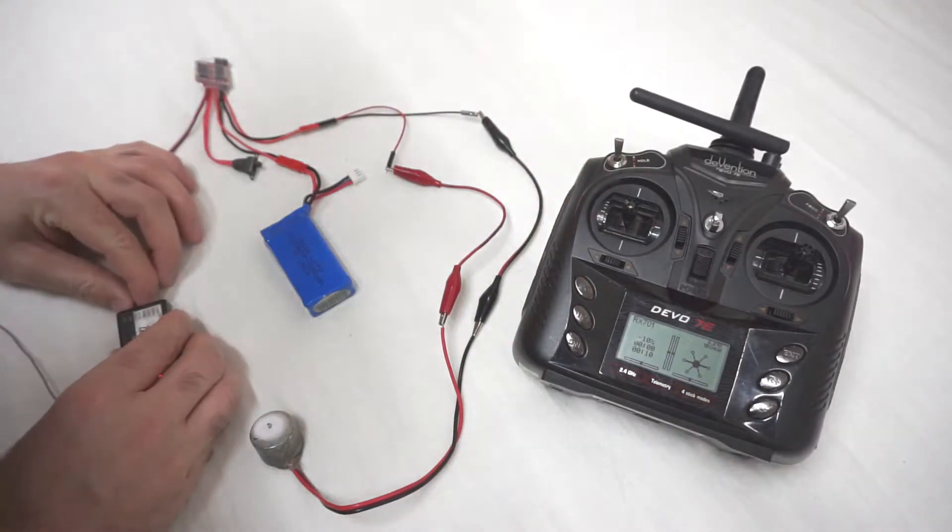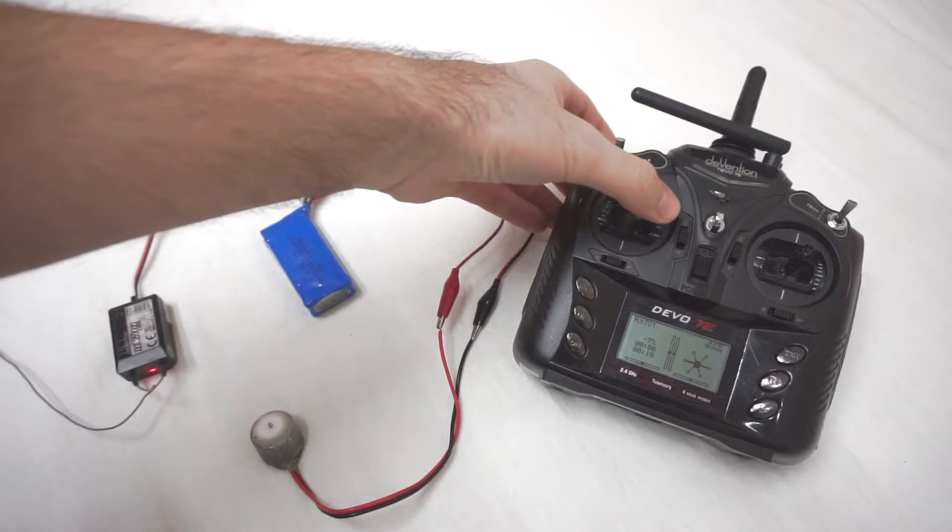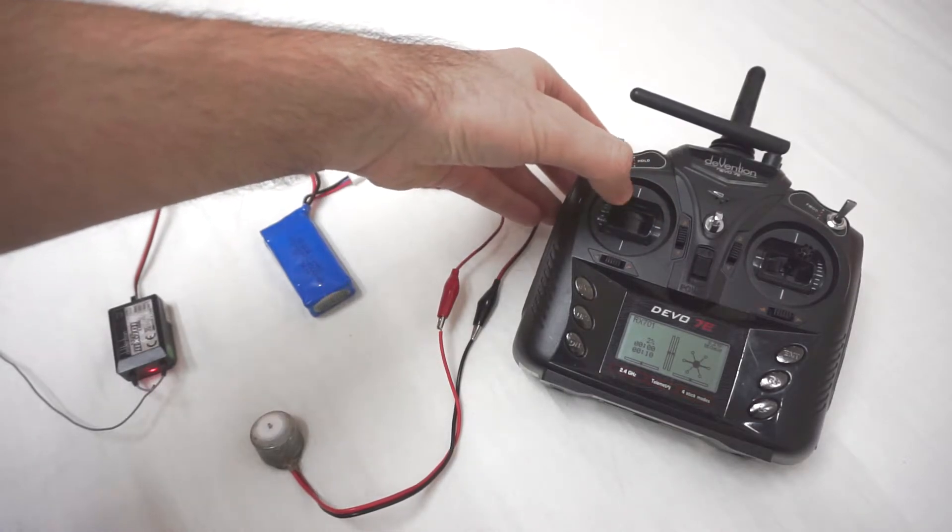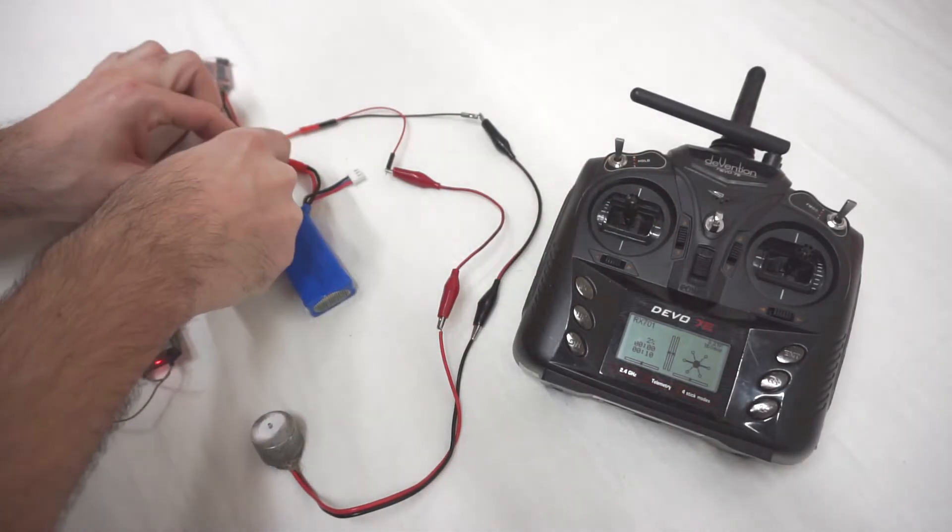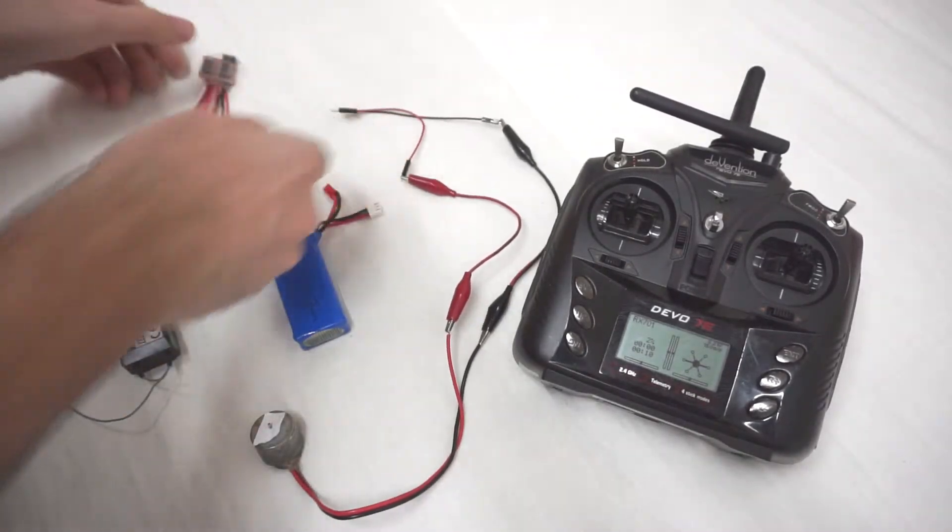Okay, let's try the rudder also. Rudder is left and right on the left stick. Okay, so power it off. Remove the JST. Remove the two wires.